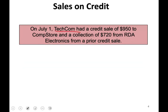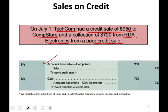Sales on credit: on July 1st, Techcom had a credit sale of $950 to Comstore and a collection of $720 from RDA Electronics from a prior credit sale. So we have two transactions: we sold something on credit and we collected some cash. For the sale on credit, we debit account receivable — Comstore — for $950 and credit sales. Then we received from RDA Electronics $720: we debit cash and credit account receivable — RDA Electronics. Notice we are specifying which customer we are receiving funds from.